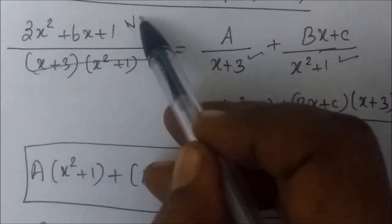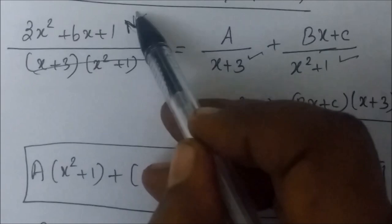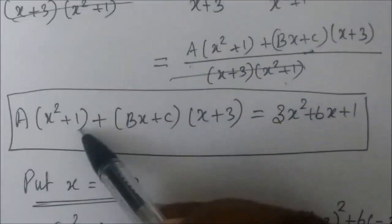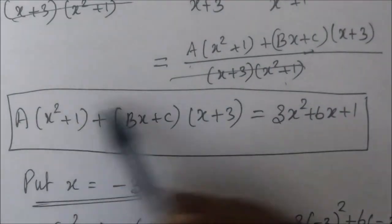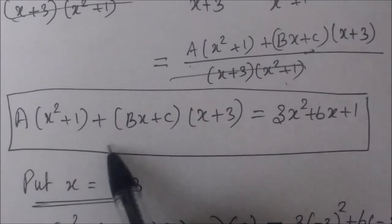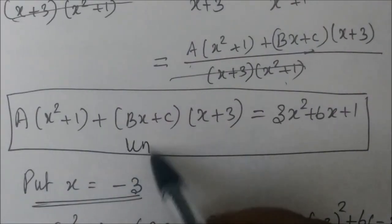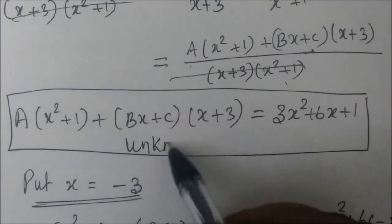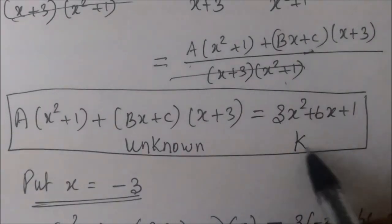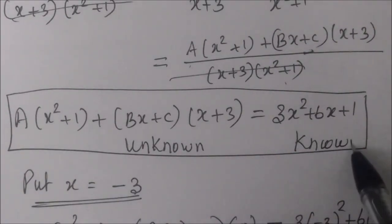The numerator will be 0. If you have a box, it will be easy to highlight. The side is unknown. The side is known. That will be easier for you.